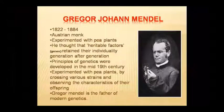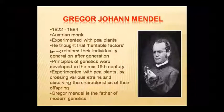Gregor John Mendel lived from 1822 to 1884. He was an Austrian monk who conducted his experiments on pea plants. He proposed the concept of heritable factors — later named genes — which maintain their individuality from one generation to the next. He gave the principles of genetics in the mid-19th century by crossing varieties of pea plants and observing characters in offspring. Mendel is called the father of modern genetics.